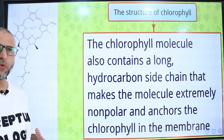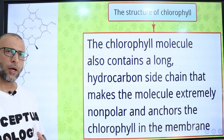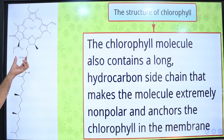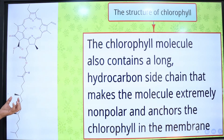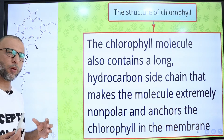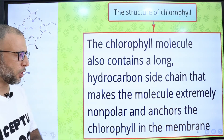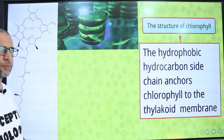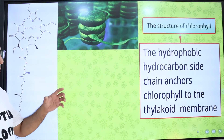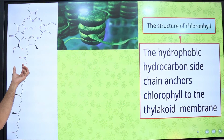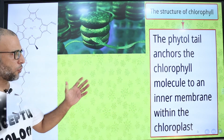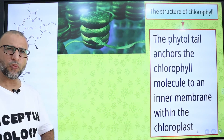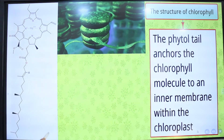The chlorophyll molecule also contains a long hydrocarbon side chain. This long hydrocarbon side chain makes the molecule extremely non-polar and anchors the chlorophyll in the membrane. So the chlorophyll molecule is attached to the thylakoid membrane with the help of this long chain called the phytol tail. The hydrophobic hydrocarbon phytol tail anchors the chlorophyll molecule to an inner membrane within the chloroplast.